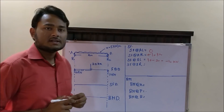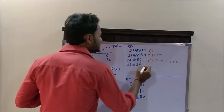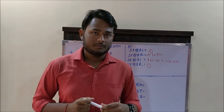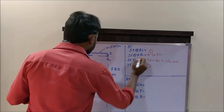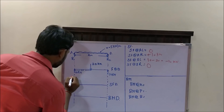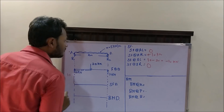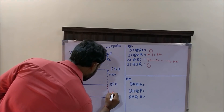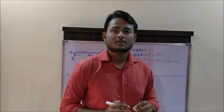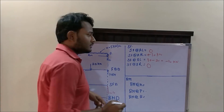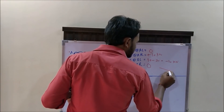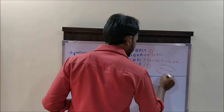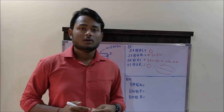Also, the shear force just to the right of B is equal to 0. Now, let us construct the shear force diagram. The shear force at A is +10 kN while the shear force at B is minus 10 kN. Now here comes the question: how do we join these two points? There can be an inclined line, or a curve like this, or a curve like this. So how do we figure out which one would come?